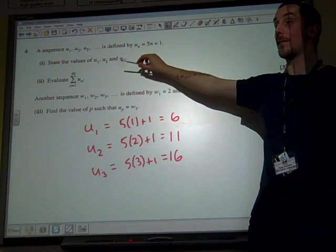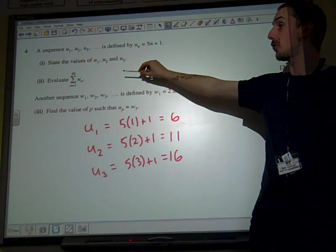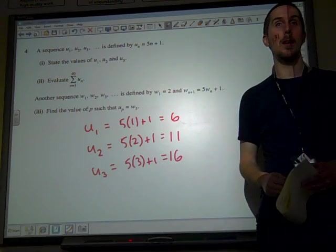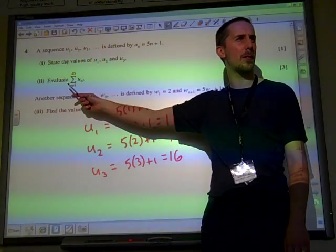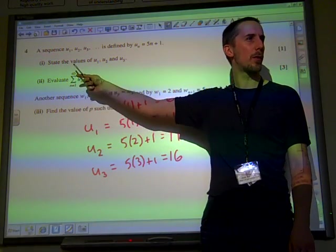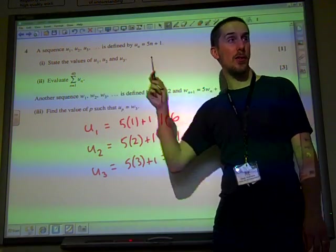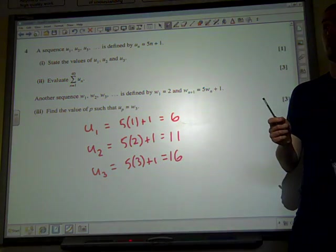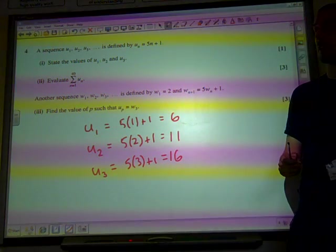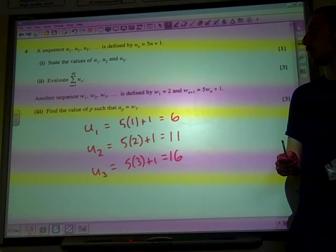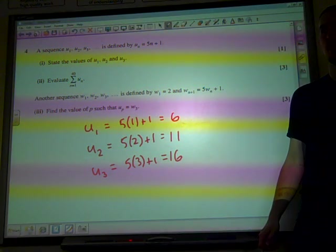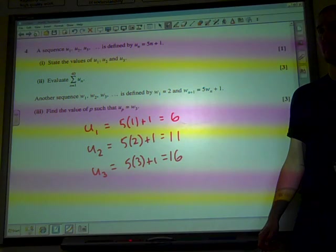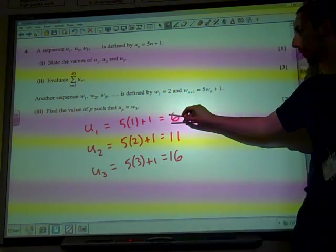Hence, it would now ask us to evaluate. Evaluate the sum. That's what this symbol means. So you've got the sum of the first 40 terms, it goes from 1 to 40. Now, in order to do this, we need to know what kind of a sequence this is. What kind of a sequence is it? Arithmetic. It's an arithmetic progression.